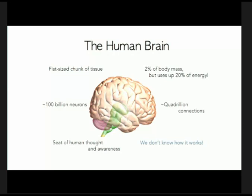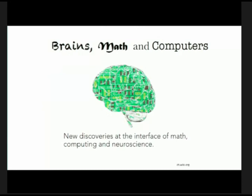But the brain is much more than a biological organ — it's an information processing entity. It's a really exciting time for new discoveries at the interface of math, computing, and neuroscience. We are looking at the brain not anymore as a biological organ but in terms of fundamental principles of computing and information processing.